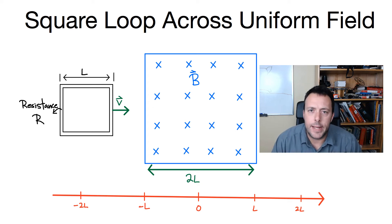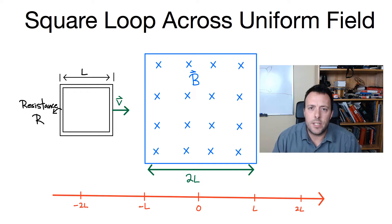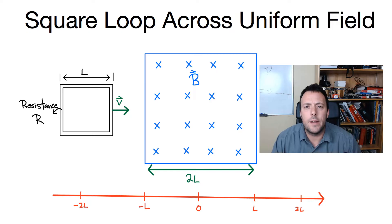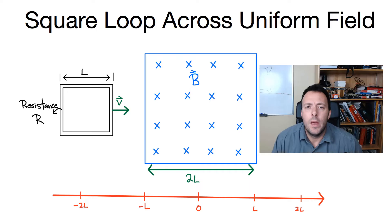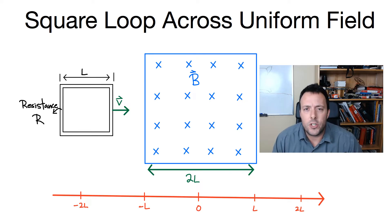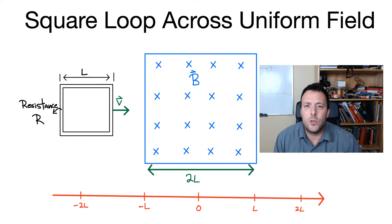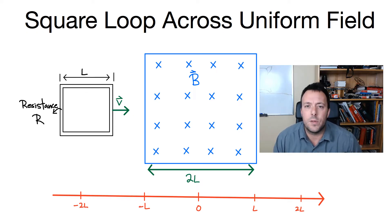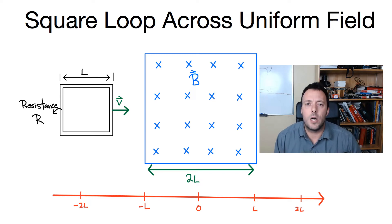Good evening everybody. Today I want to look at a magnetic induction problem. It's a really nice problem and I want to imagine this square loop here that I have drawn on the whiteboard. The square loop has a resistance R. It's a conductor and it has a particular resistance to it, and what you're going to do is grab it and drag it to the right through a region where there is a magnetic field. We want to see what happens as I drag it across this region where there's a uniform magnetic field, and the field is always pointing into the page. Let's see how we solve this problem.